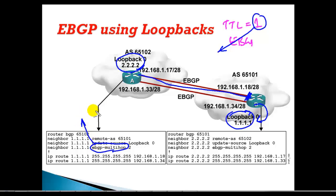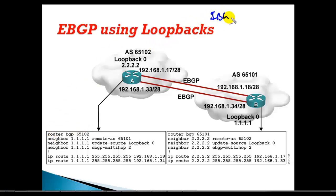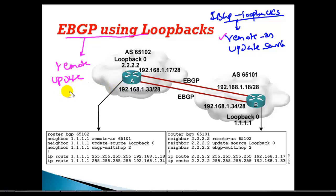To increase the TTL, we add the 'ebgp-multihop' command. If you don't specify a number, it defaults to 255 hops, but you must define a value greater than one — two or more works. To summarize: for eBGP using loopbacks, three commands are mandatory — 'remote-as', 'update-source' to change the source to the loopback interface, and 'ebgp-multihop' to allow more than one hop.